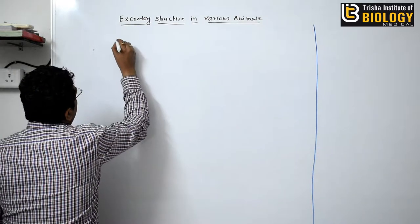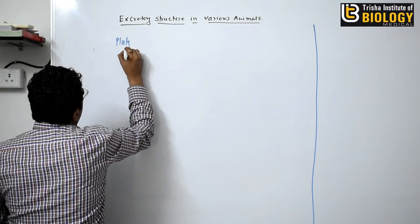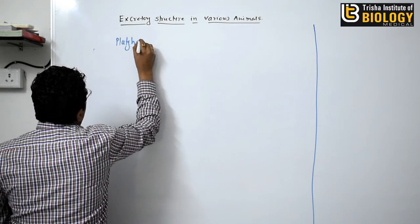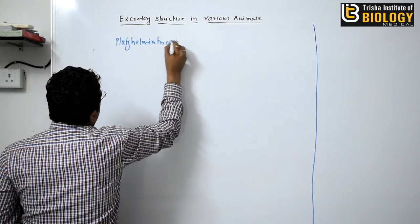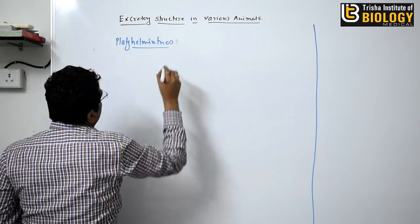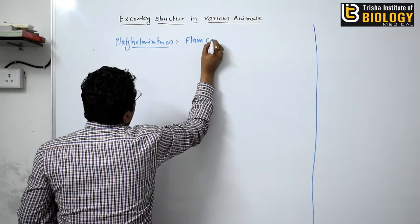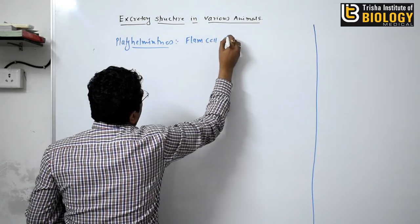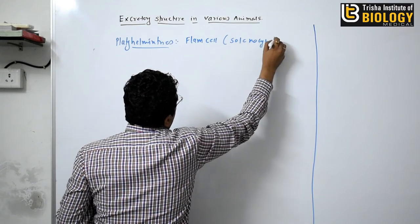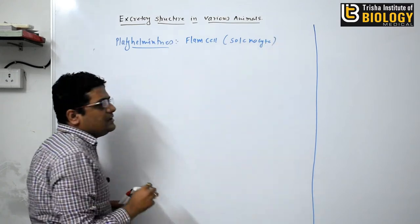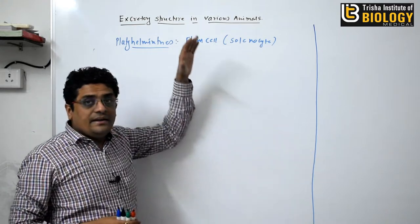First is the Platyhelminthes. Platyhelminthes has the flame cell, and this flame cell is also known as the solenocyte. With the help of this flame cell, they excrete the excretory waste.